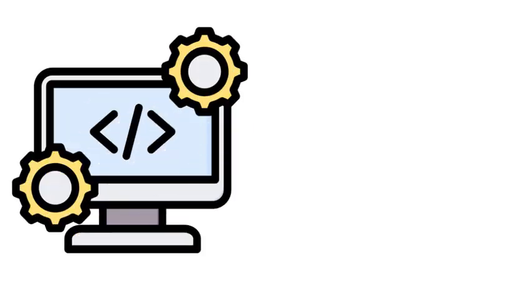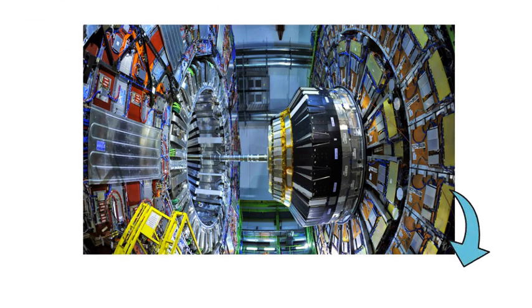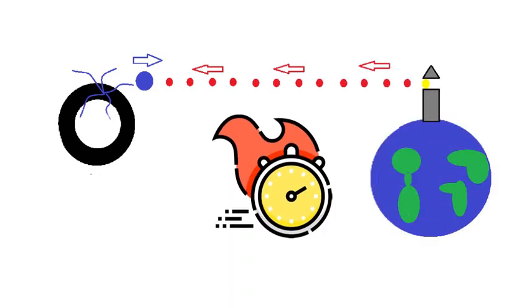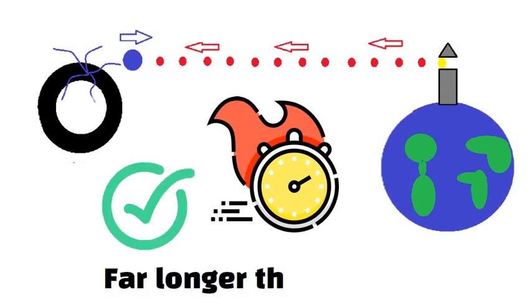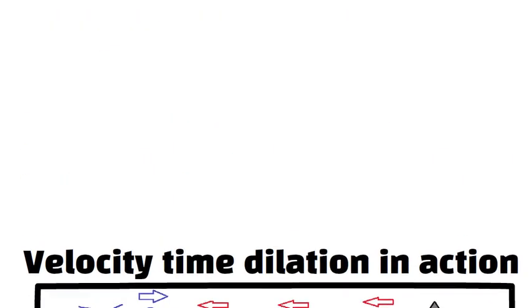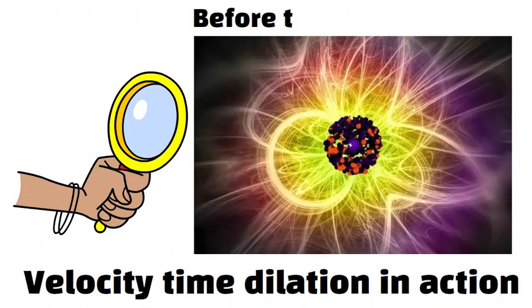Instead, built-in software and hardware fix the offset so your phone can pinpoint your location. Particle accelerator experiments provide another real-world demonstration. When particles like muons move near light speed, we watch them exist far longer than expected. That's velocity time dilation in action, letting us study high-energy collisions before they decay away.